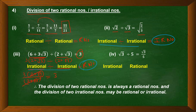For irrational divided by rational: root 3 divided by 5 gives root 3 by 5, which is irrational. So the division of two rational numbers is always a rational number, and the division of two irrational numbers may be rational or irrational. After simplification only will we know whether the result is rational or irrational.